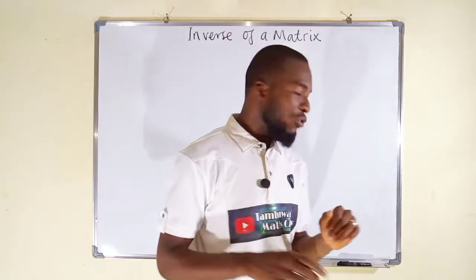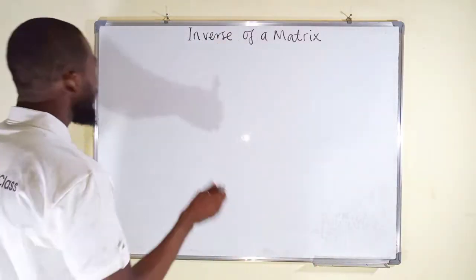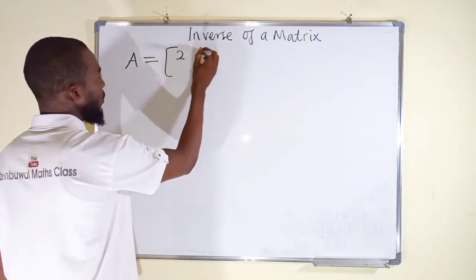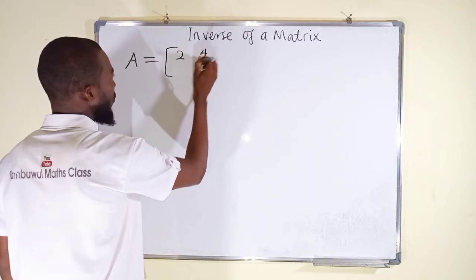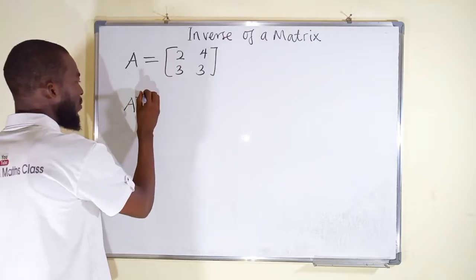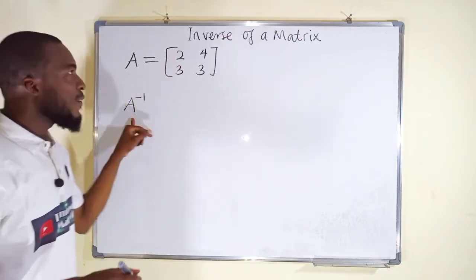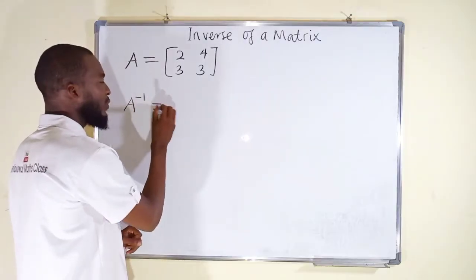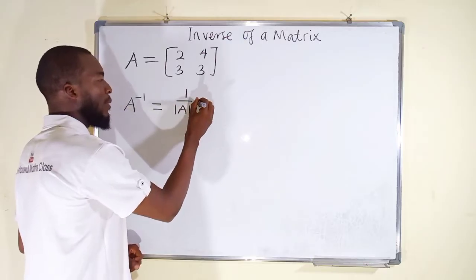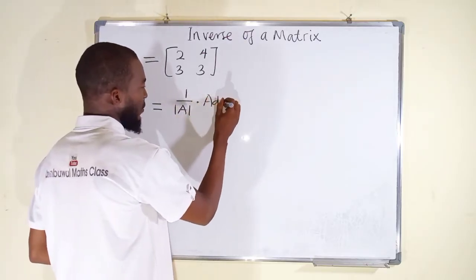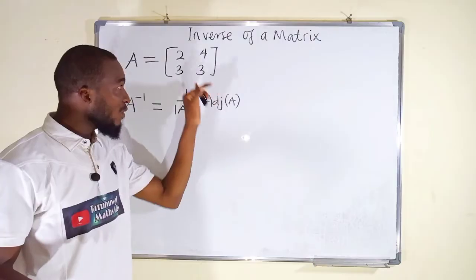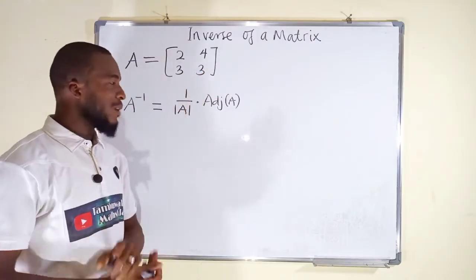So let's start with 2x2 matrix. Suppose we have a matrix A with entries 2, 4, 3, 3. We want to find the inverse of this matrix. To find the inverse of matrix A, there is a particular formula: 1 over the determinant of the matrix multiplied by the adjoint of the same matrix. So we are going to find the adjoint as well as the determinant of this matrix.